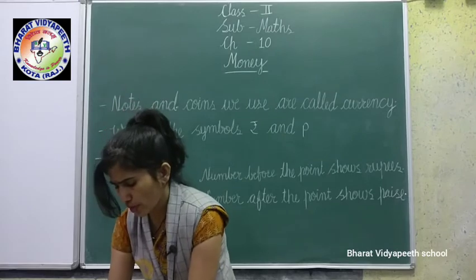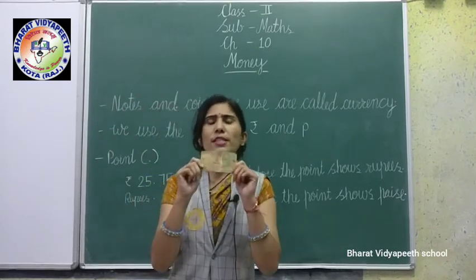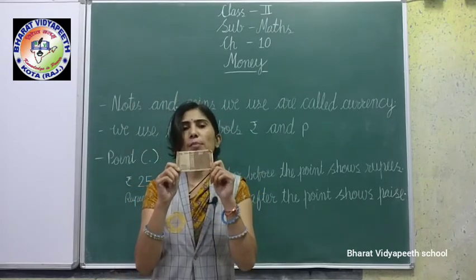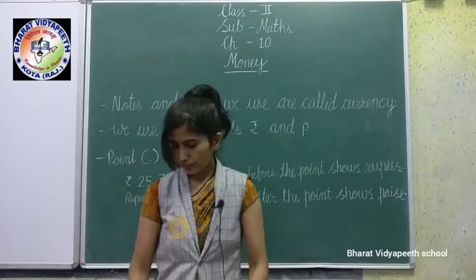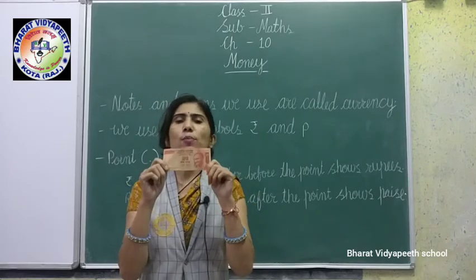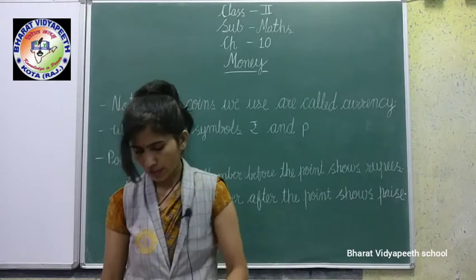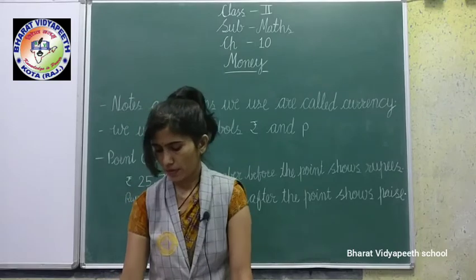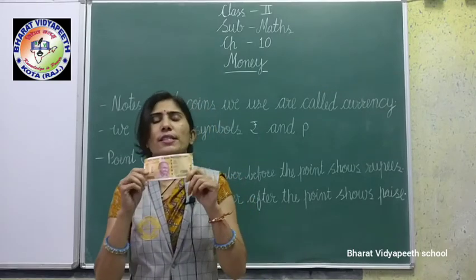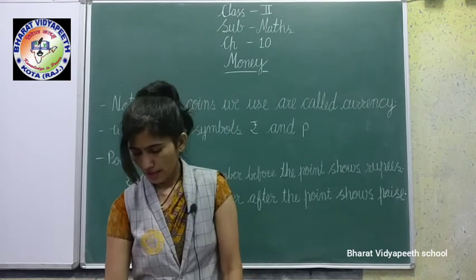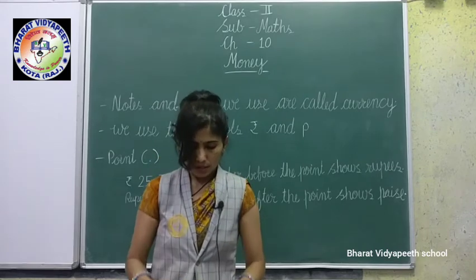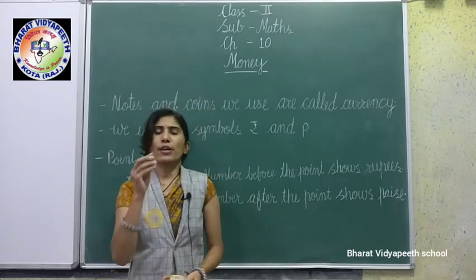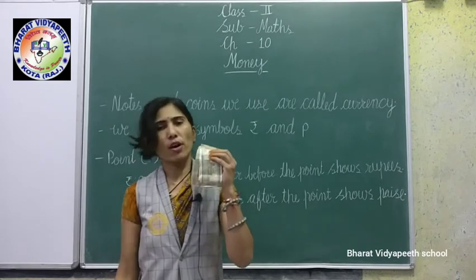Now I will show you some notes. This is a five rupee note. This is a ten rupee note. As you can see, this note is made of paper. This is a 20 rupee note. 100 rupee — this is 100 rupees. And 200 rupee. And 500 rupee. So students, coins are made of metal and these notes are made of paper.